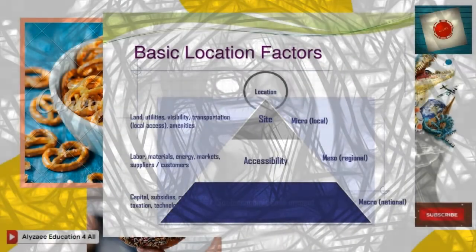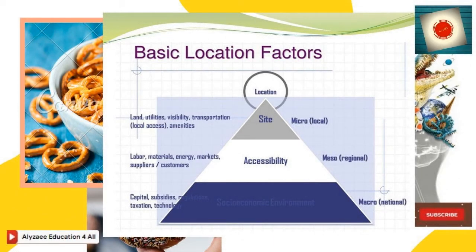This pyramid on location explains the basic location factors. Looking into the location, you have to look at the site, its accessibility, and socio-economic environment at the micro, meso, or macro level. Micro is local, meso is regional, and macro is national. At the micro level we look at land, utility, visibility and transportation. At the meso level we look mainly at labour, material, energy, market, suppliers and customers. At the macro level the main ingredients are capital, technology and taxation. The three theories to understand are: factors of location, scale and organization, and business and production cycle.